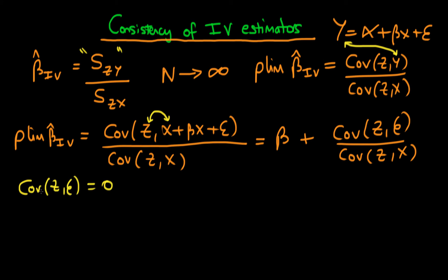However, let's think about a very weak and slightly bad estimator, which has the properties that the covariance of Z with epsilon doesn't quite equal zero. It equals some non-zero value A, which is very small, but it is still greater than zero. So that's saying that we have a slightly bad instrument.